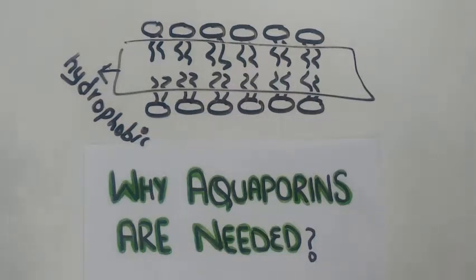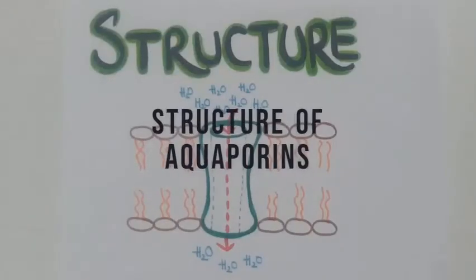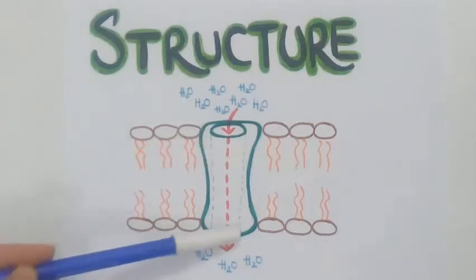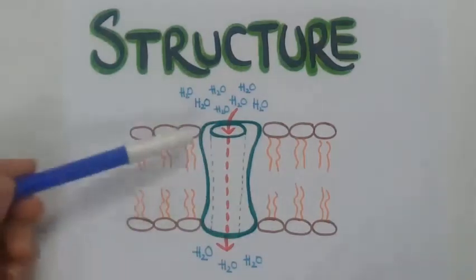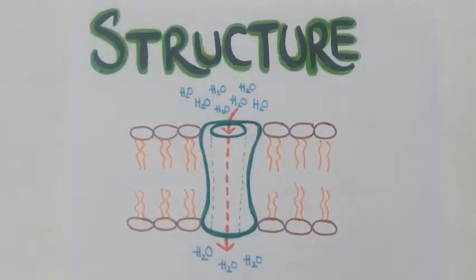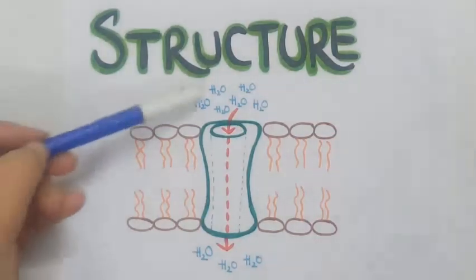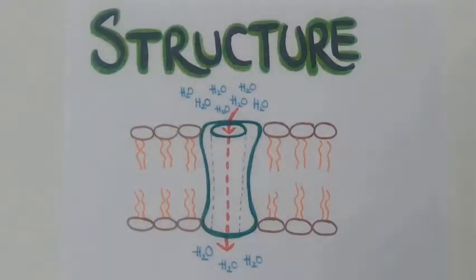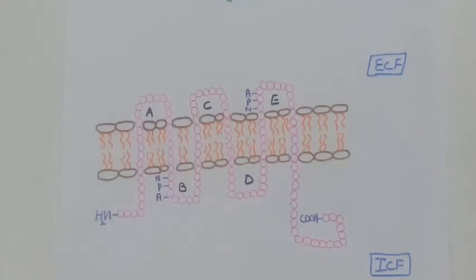So we need a more rapid way of transportation of water, and that happens through special water channels called aquaporins. The structure of aquaporins: we know that the aquaporin is a pore made up of intrinsic proteins that pass through the cell membrane. This hourglass-shaped protein is your aquaporin, which allows the passage of water through the lipid bilayer.